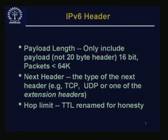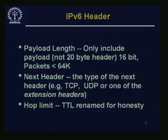For example, there may be class of service or quality of service requirements for one particular flow which may require bandwidth reservation. Next is the payload length, which includes only the payload and not the 20-byte header — this is 16 bits, so packets are up to 64 KB. The next header field gives rise to the possibility of more than one header — either another IPv6 extension header or a higher layer header like TCP or UDP. The hop limit field is essentially the TTL from IPv4, just renamed for clarity.